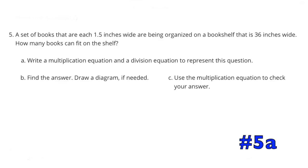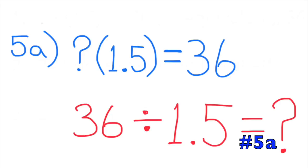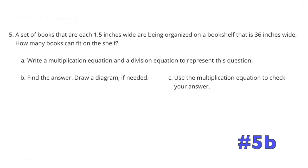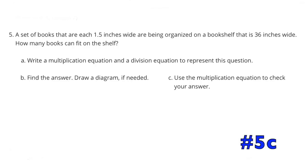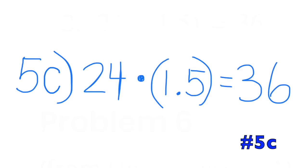Problem 5: A set of books each one and five-tenths inches wide are being organized on a shelf that is 36 inches wide. How many books can fit on the shelf? Multiplication equation: what number times one and five-tenths equals 36. Division equation: 36 divided by one and five-tenths equals what number. The answer is 24 books can fit on the shelf. Check: 24 times one and five-tenths equals 36.